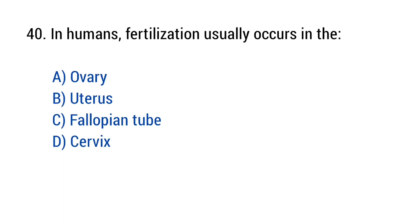Question number 40. In humans, fertilization usually occurs in the fallopian tube (option D).